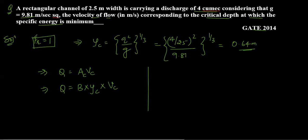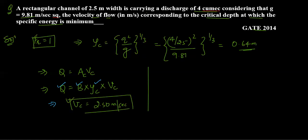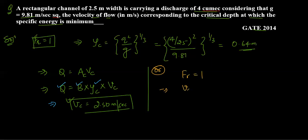We know the discharge is 4 m³/s, B value is 2.5 m, and Yc has been calculated as 0.64 m. Substituting these values gives us the critical velocity. So this is the answer for this first question.